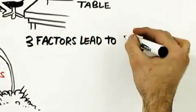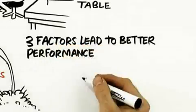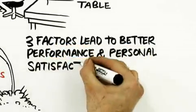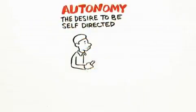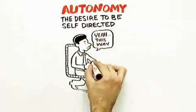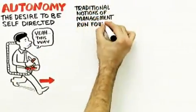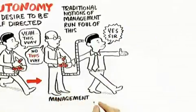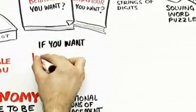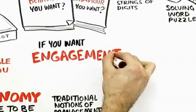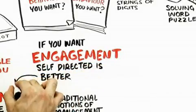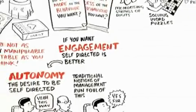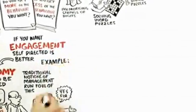Now once you do that, it turns out there are three factors that the science shows lead to better performance, not to mention personal satisfaction: autonomy, mastery, and purpose. Autonomy is our desire to be self-directed, to direct our own lives. In many ways, traditional notions of management run afoul of that. Management is great if you want compliance, but if you want engagement, which is what we want in the workforce today as people are doing more complicated, sophisticated things, self-direction is better.